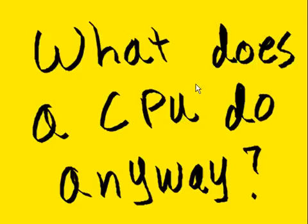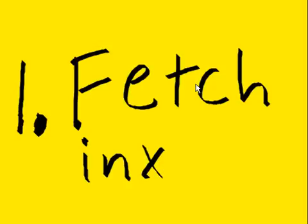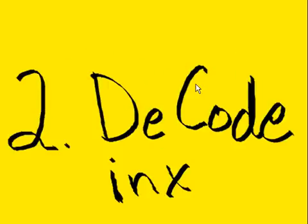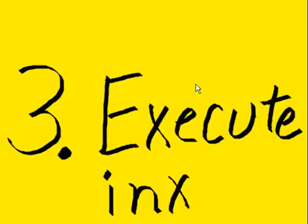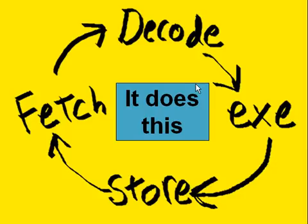So what does the CPU do anyway? Basically it does four things: it will fetch an instruction, decode the instruction, execute it, and then store the results somewhere. Fetch, decode, execute, store. Fetch, decode, execute, store. It does this.